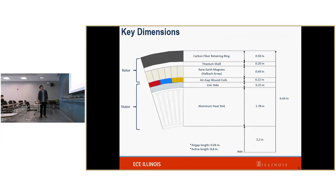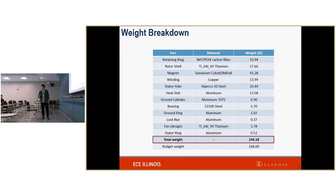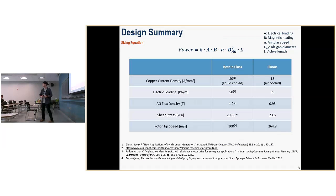The key dimensions: we have an outer diameter of about 13 inches and an active length of about 8.8 inches, so you have a feel for how big our motor is. The weight was 144.18 pounds, and here's the breakdown. We have about 24 pounds of leeway that we could use as future opportunities for design changes if we end up needing them.